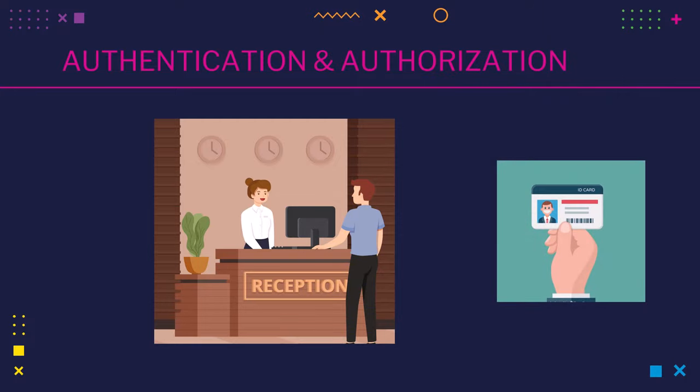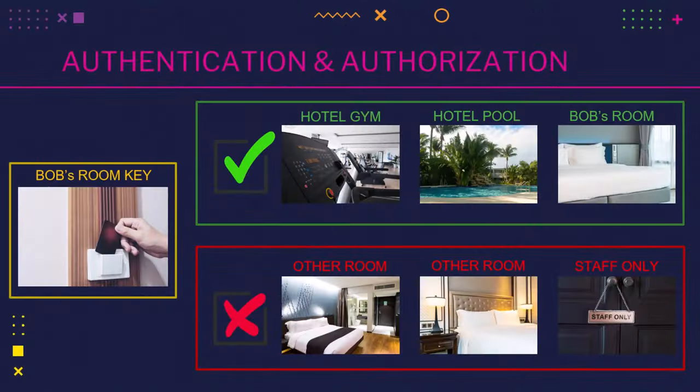After the hotel confirms that Bob's identification is valid, they will hand him a key to his room. Now Bob can open the door of his own room. Along with that, he can also access some amenities like the gym, pool, and sauna, but he cannot open the doors of other rooms. So the key that Bob has will have limited access. This is called authorization.